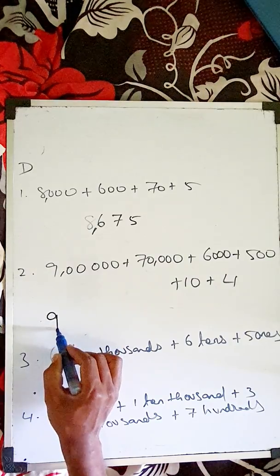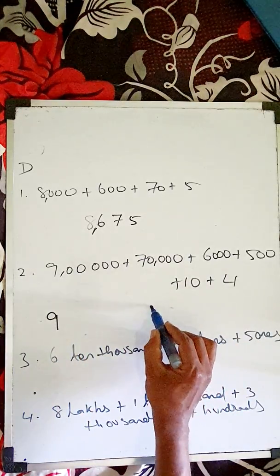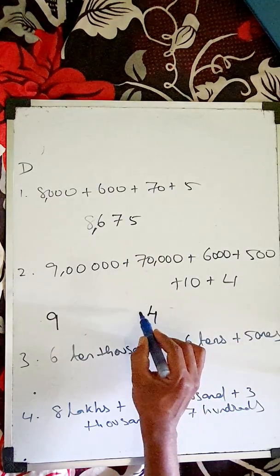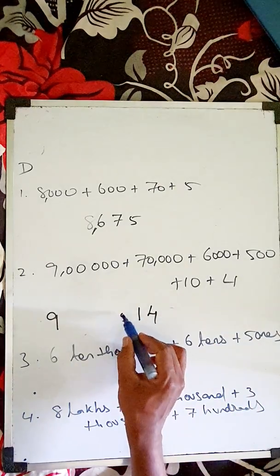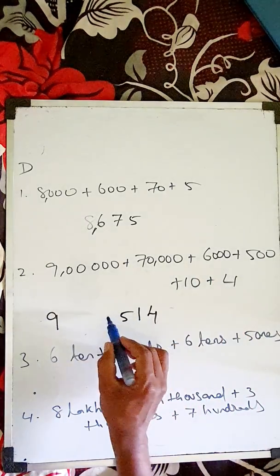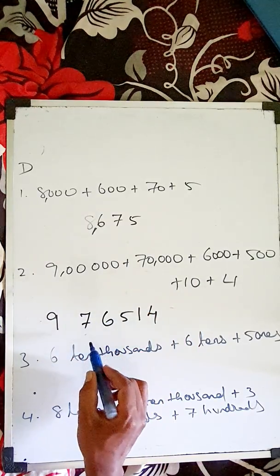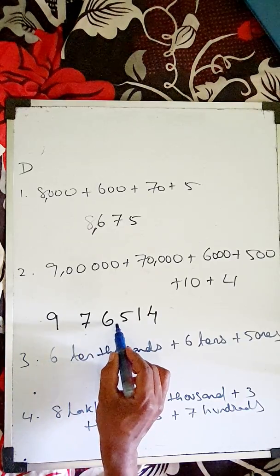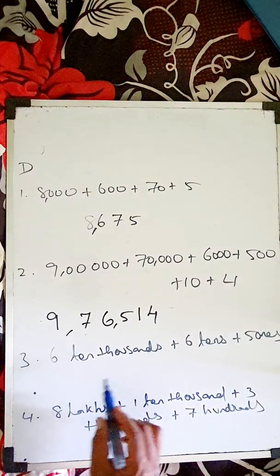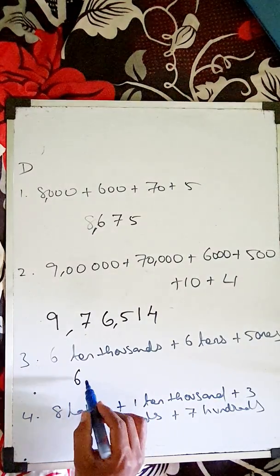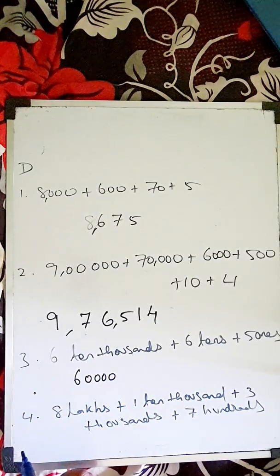Next one: start from back to front. Nine, then four — so fourteen. Then five hundred, so five. Then six thousand — six. Then seven — so you can see three, two, one. So the number has six thousand five hundred fourteen: 6,514. Next: six ten-thousands — that means sixty thousand, so one, two, three, four zeros.